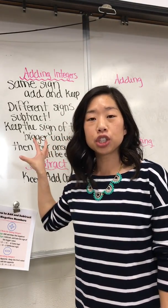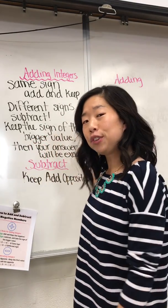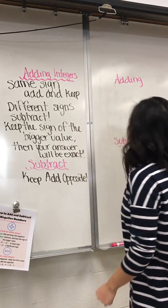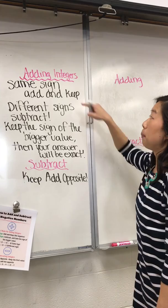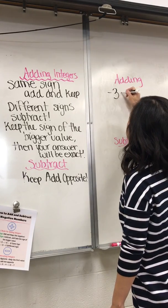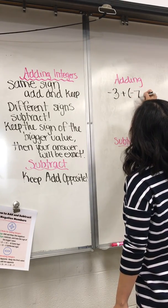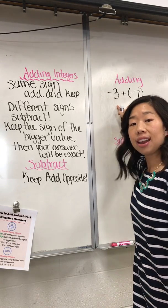That's a super easy way for your students to remember how to add integers. I'll give you two examples. Same sign, add and keep. If we have negative three plus negative seven, they're both negatives.